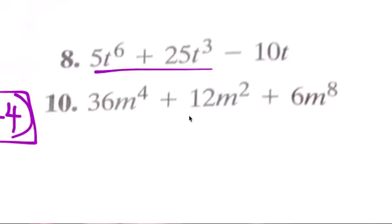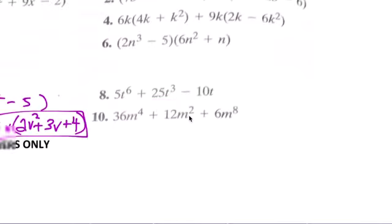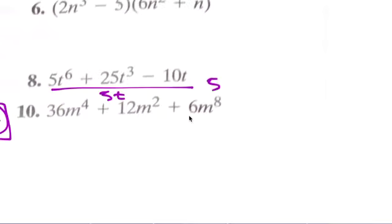Here we can factor out 5 and t, and your answer is 5t parentheses, 1t to the 4th power plus invisible 1 to the 5th power.